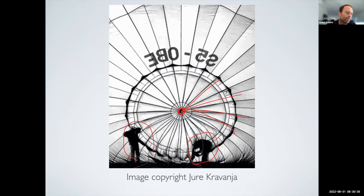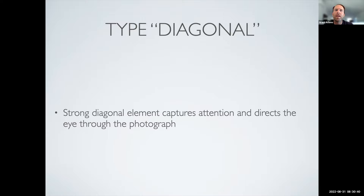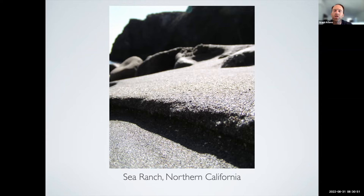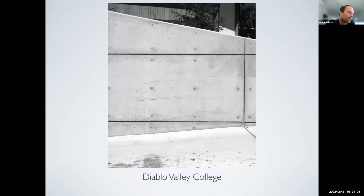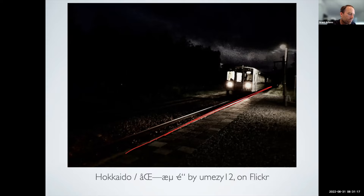A diagonal composition is where a strong diagonal element captures your attention and directs your eye through the photograph. It might be something as simple as a ledge or a cliff — this example was on the beach at Sea Ranch with a shallow depth of field in sand. It might also be architectural: here at DVC we have strong diagonals as part of the image, with the horizontal versus the diagonal creating tension. Another example uses train tracks on a strong diagonal as part of the composition.